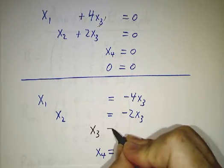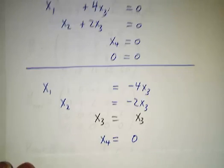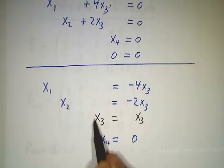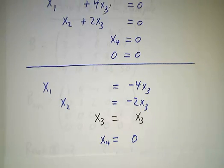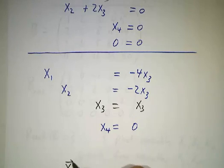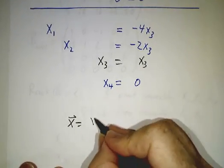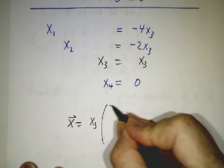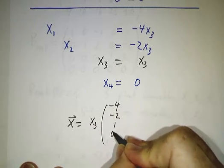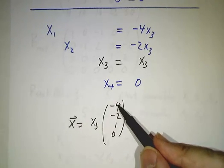That x3 is equal to x3. It doesn't really tell us anything new, but now we've got all of the components of x written in terms of x3. So in other words, x is an arbitrary number, x3 is free, it can be whatever number you want, times the vector (-4, -2, 1, 0). The solutions to our system of equations are all multiples of (-4, -2, 1, 0).